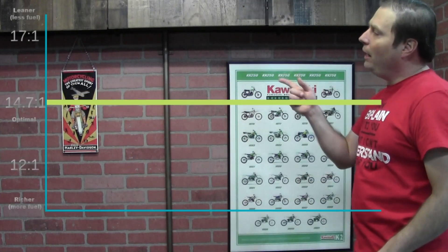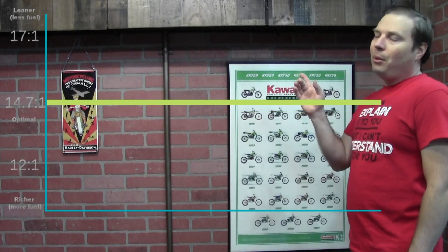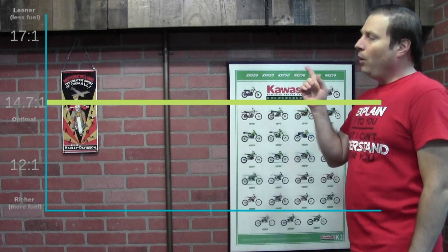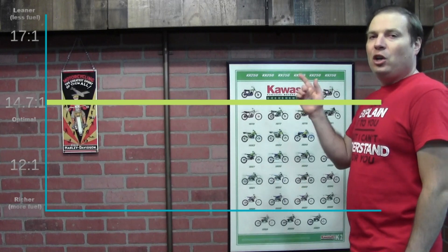To begin understanding what proper jetting is, we need to understand what the proper air-fuel mix is. That can be different for different types of engines and different types of fuels, but we'll just keep it simple and talk about typical, plain old, regular, at-the-pump gasoline or petrol. If you take a look at this chart right here, this is a chart of what the proper air-fuel mixture for typical gasoline is, and that's approximately 14.7 to 1.